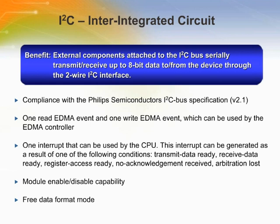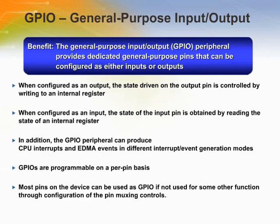The I2C modules allow AM1X to communicate with other board components using a 2-pin shared bus in both master and slave configurations. The I2C specification is supported by a large number of manufacturers for common interoperability. The general purpose I/O peripheral provides dedicated general purpose pins that can be configured as either inputs or outputs. The GPIO peripheral can also produce CPU interrupts and EDMA events in different interrupt/event generation modes.